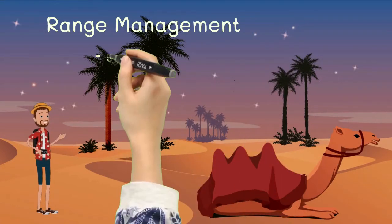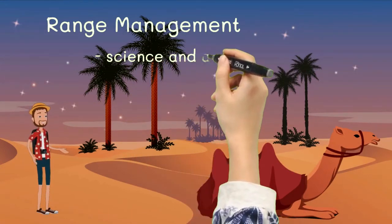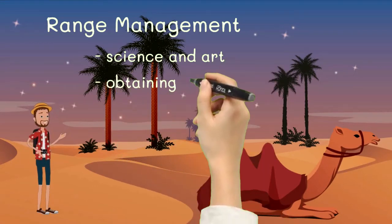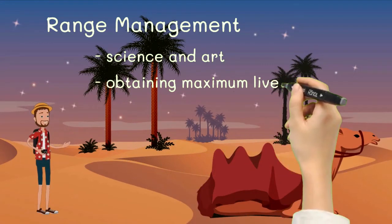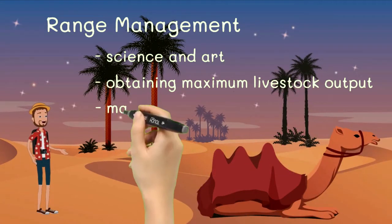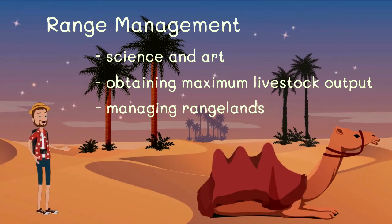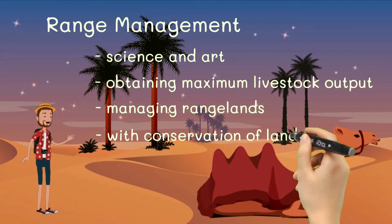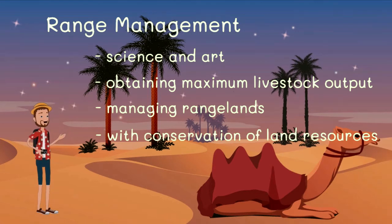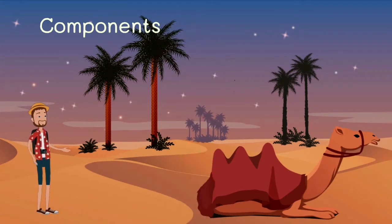By definition, range management is a science and art of obtaining maximum livestock production from rangeland that is consistent with the conservation of land resources. The key here is achieving optimum output without compromising the environment and the land resources.